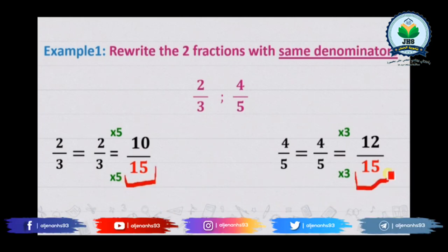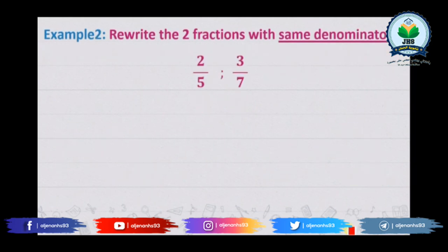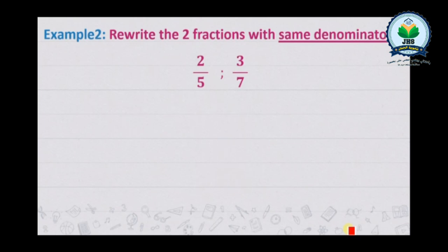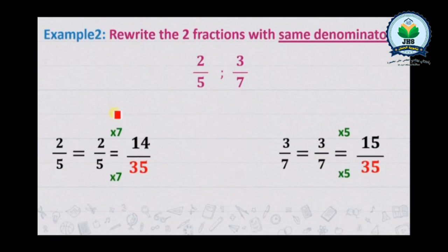Now it's your turn: rewrite the two fractions with the same denominator. We have here two over five and three over seven. Remember, we multiply the first fraction by the denominator of the second fraction, then we multiply the second fraction by the denominator of the first fraction. Time's up! The solution: we multiply two over five by seven, so we obtain fourteen over thirty-five. Then we multiply three over seven by five, so we obtain fifteen over thirty-five — the same denominator: thirty-five.